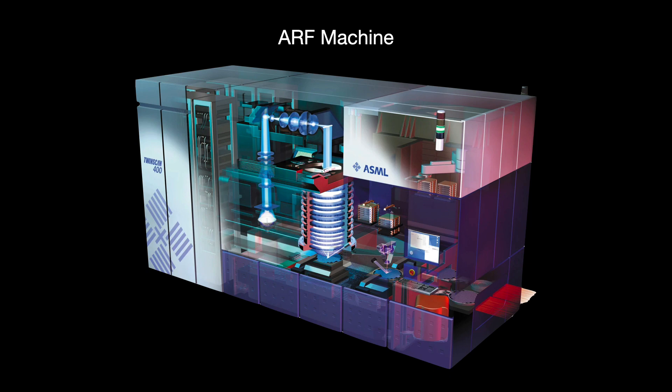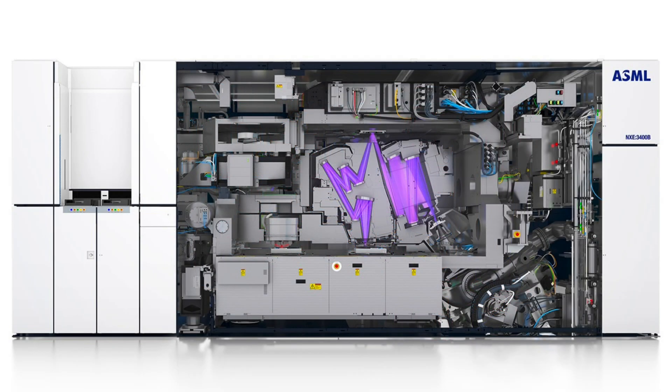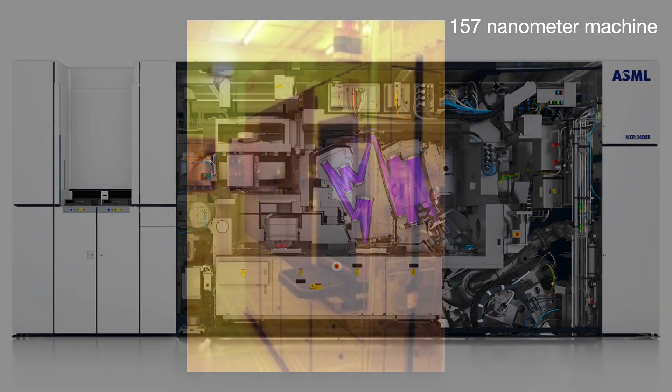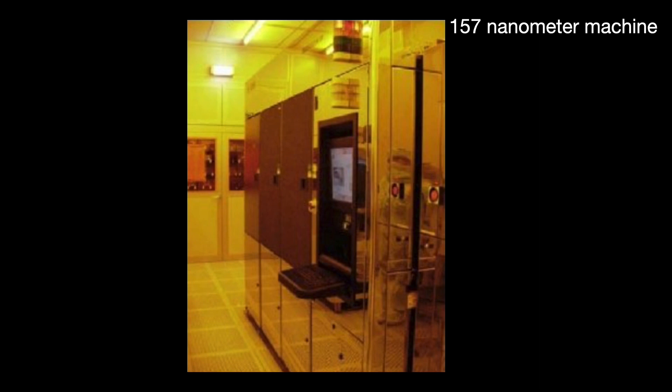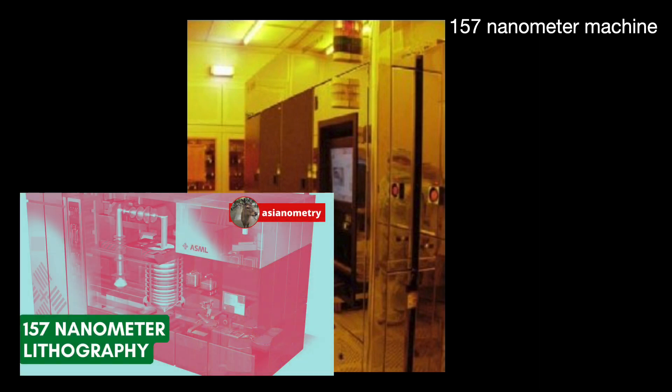The original idea had been to go to the 13.5 nanometer wavelength with extreme ultraviolet, or EUV. However, delays in the technology made this unworkable for the upcoming process nodes. So the industry pivoted towards 157 nanometer lithography, the last possible optical lithography technology. I discussed 157 in a prior video. Progress on the technology was difficult, troubled by substantial challenges.